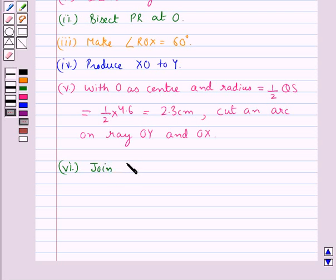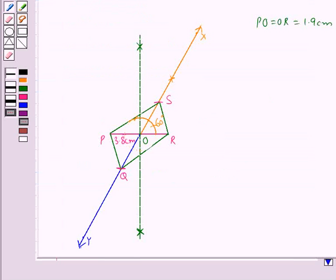In the next step, we join PQ, QR, RS and SP. So after joining PQ, QR, RS and SP, we get PQRS, the required parallelogram.